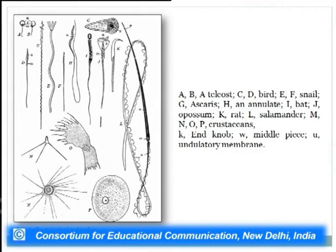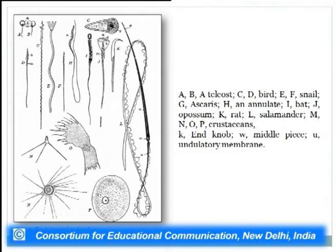There is a whole variety of sperm structures across the animal kingdom — from teleost fish, birds, snails, Ascaris worms, annelids, bats, opossums, rats, salamanders, and crustaceans — illustrating diverse sperm morphologies. The small k represents the end piece, W the middle piece, and U the undulatory membrane.